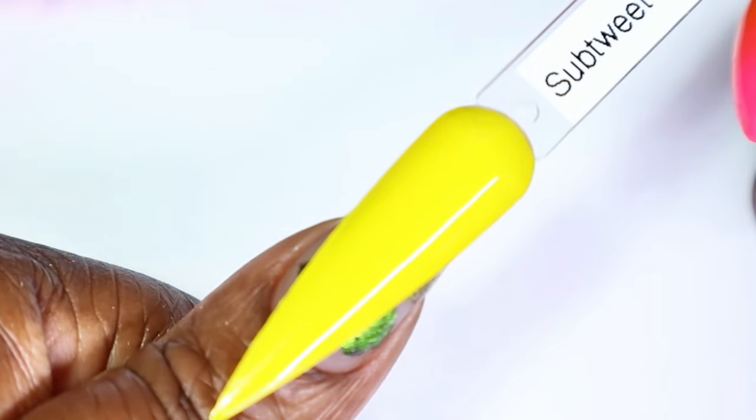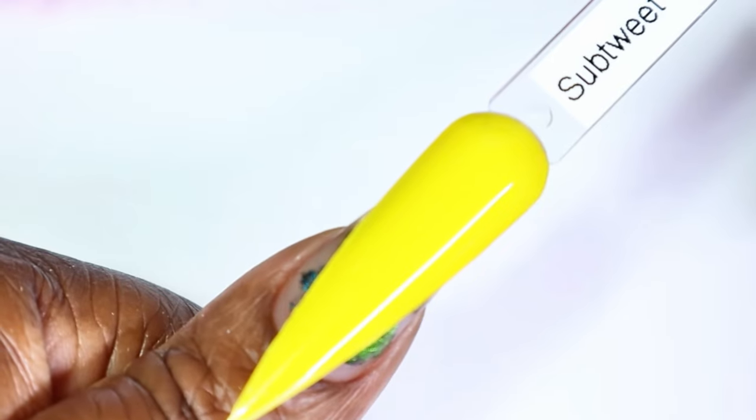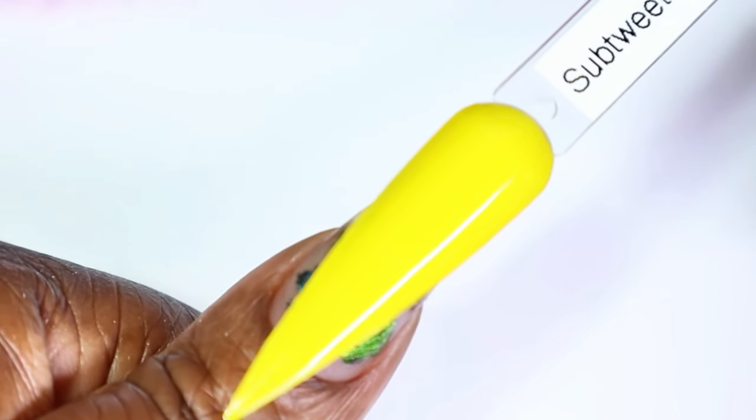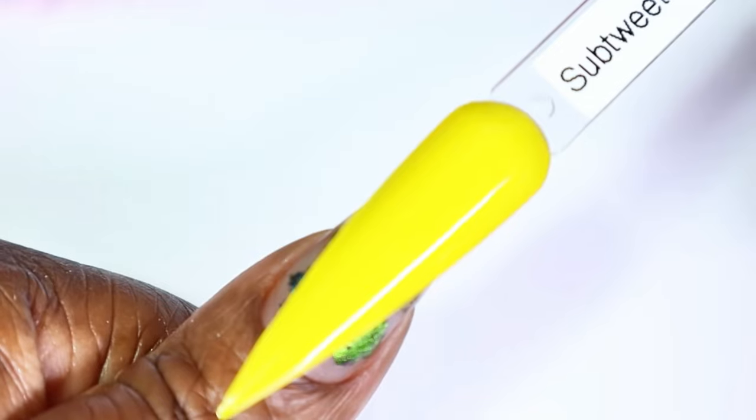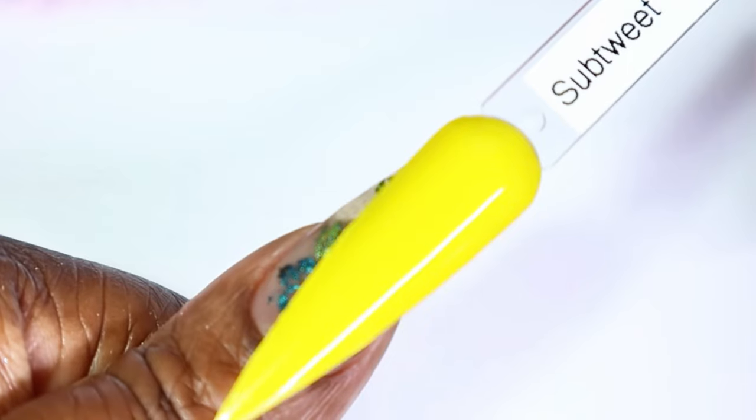And here is Subtweet in one coat. Of course, like any yellow, it was a bit streaky, but again, that's expected with yellow polishes. It's a very nice yellow. It can be used as a great pick-me-up in the winter months and it's really nice for spring and summer. I am going to go in with a second coat. And lastly, we have Subtweet against my skin tone. This is a very vibrant yellow. Two coats. You know what? I'd probably even wear this one and that is saying a lot because I really don't lean towards yellow. But this one and Saucy, very nice.